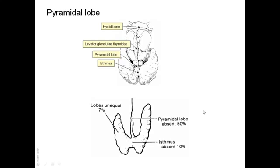In about 50% of glands, there is a pyramidal-shaped extension upwards from the isthmus of the thyroid gland, called the pyramidal lobe. Sometimes it is connected to the hyoid bone by a piece of fibrous tissue, which in some cases may also contain muscle fibers called the levator glanduli thyroidi, meaning the elevator of the thyroid gland.